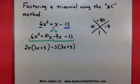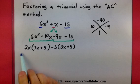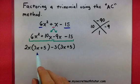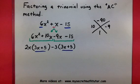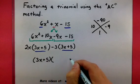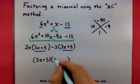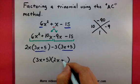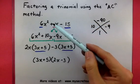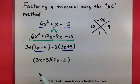Now look at what we have. This is essentially one term, and all of this is essentially one term, and moreover, they both contain the 3x plus 5. It means we are going to factor out the 3x plus 5. What will be left after we factor that? The 2x and the minus 3. So we've taken our original polynomial, 6x squared plus x minus 15, and shown that it factors into 3x plus 5 and 2x minus 3.